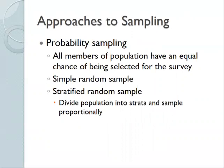In contrast, the gold standard is probability sampling, where researchers can calculate how likely it is that someone will be in the sample, and everyone in the population has an equal chance of being selected. One approach is a simple random sample, where every individual has an equal chance of being included — for example, getting a list of registered students and using a random number generator to select ID numbers, making it truly random.